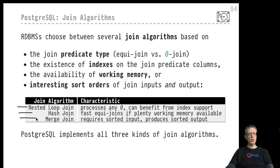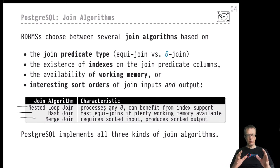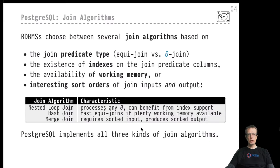Merge join is the counterpart to hash join in the sense that it focuses on sorted inputs. It requires sorted inputs but can also guarantee that output will be produced in a well-defined sorted order. If sort orders are either produced by earlier parts of the plan or required by later parts, then merge join might be just the right choice. Merge join can also be performed in situations where there is little working memory. PostgreSQL implements all three kinds; we will also talk about joining in MonetDB, in particular the variant of hash join implemented there.